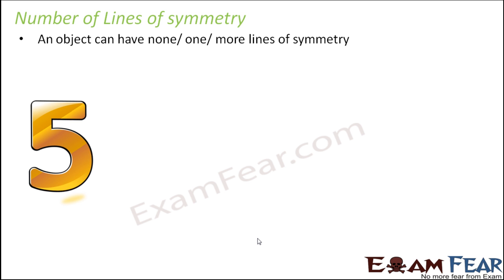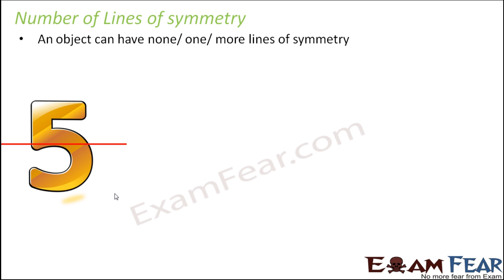Let us take some examples. Consider the number 5. How many lines of symmetry does it have? When you look at 5 and imagine a vertical line of symmetry or a horizontal line of symmetry, neither divides it into two equal halves. Even if you think of diagonal lines, there is no such line which can divide it into two equal halves. Therefore, we can say that 5 has no lines of symmetry.